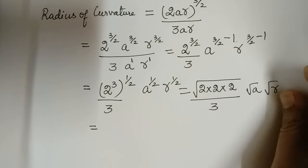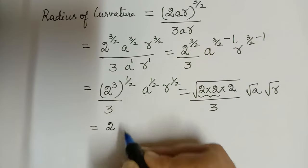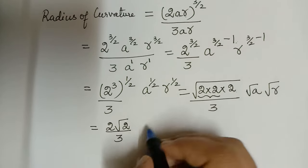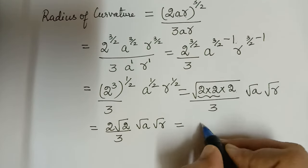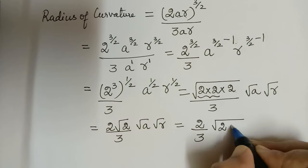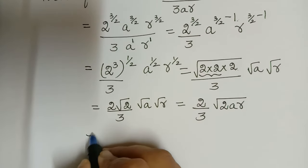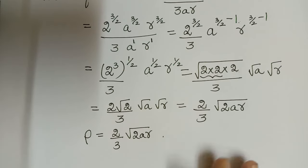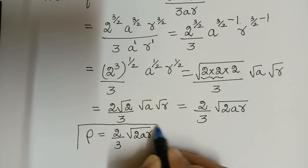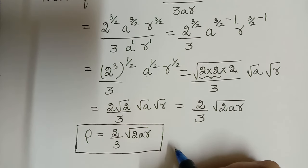Combining everything inside the square root gives rho equal to (2/3)√(2ar). Therefore the radius of curvature of the cardioid r = a(1 − cos θ) is (2/3)√(2ar). This is an important question from the examination point of view. Hope you have understood this problem.